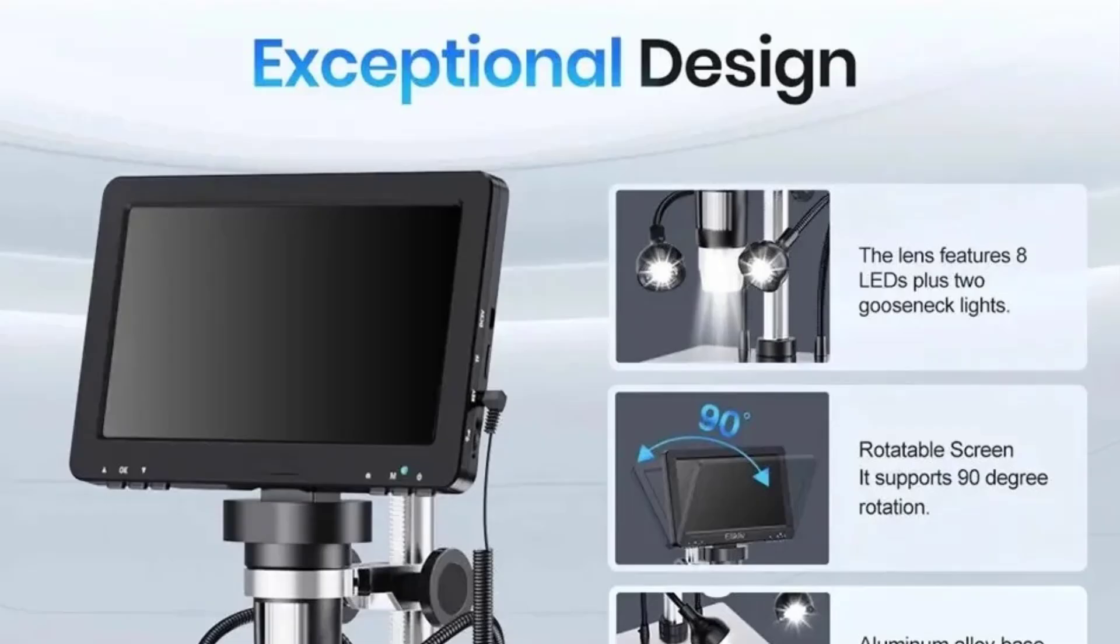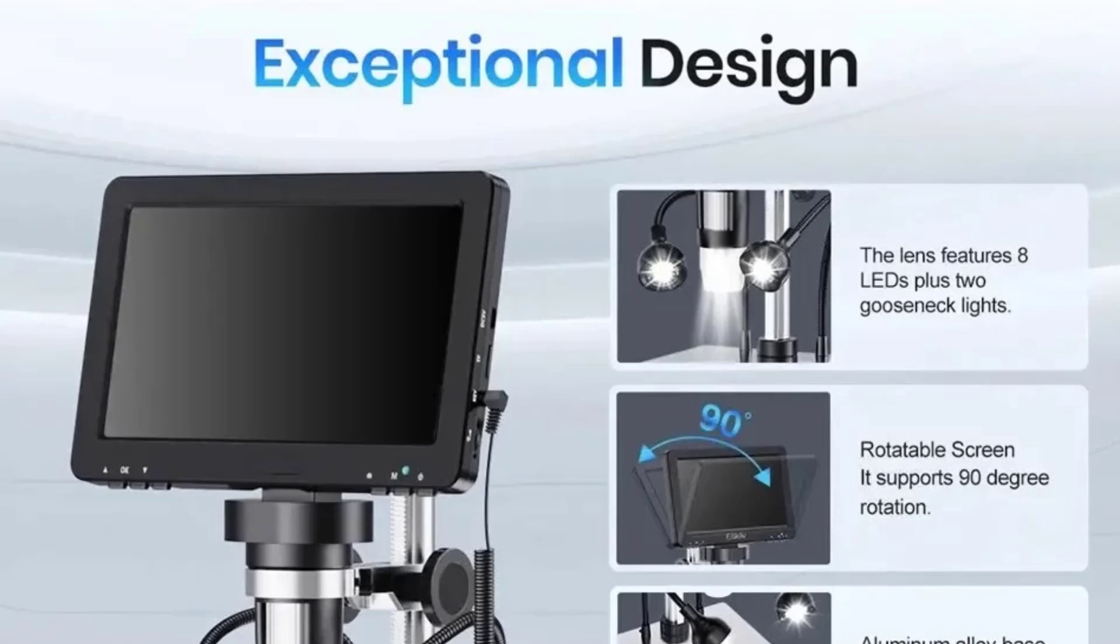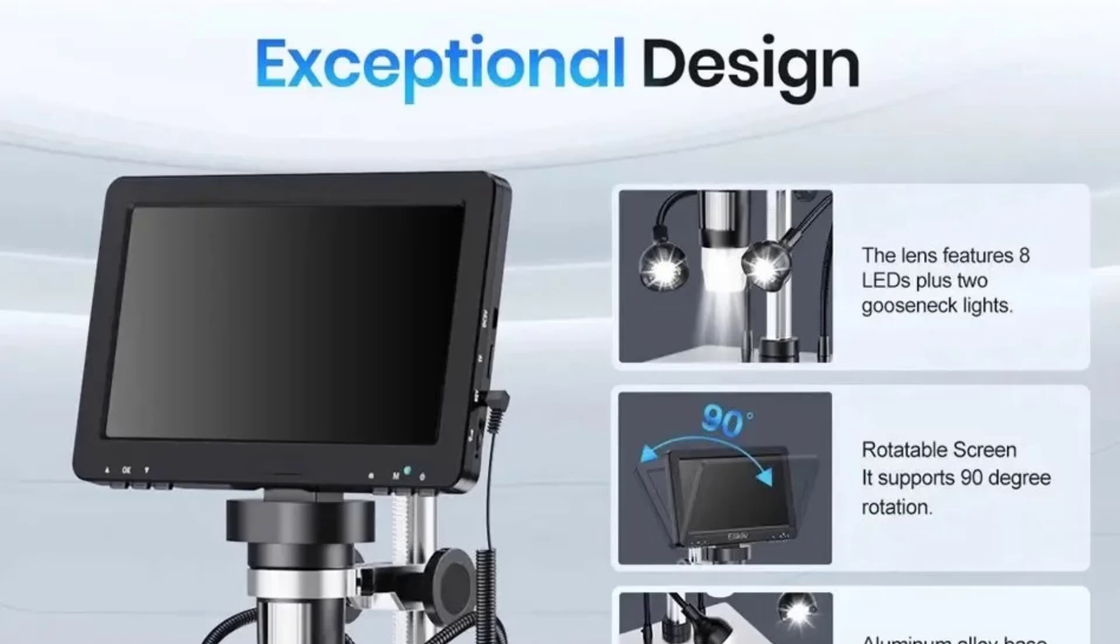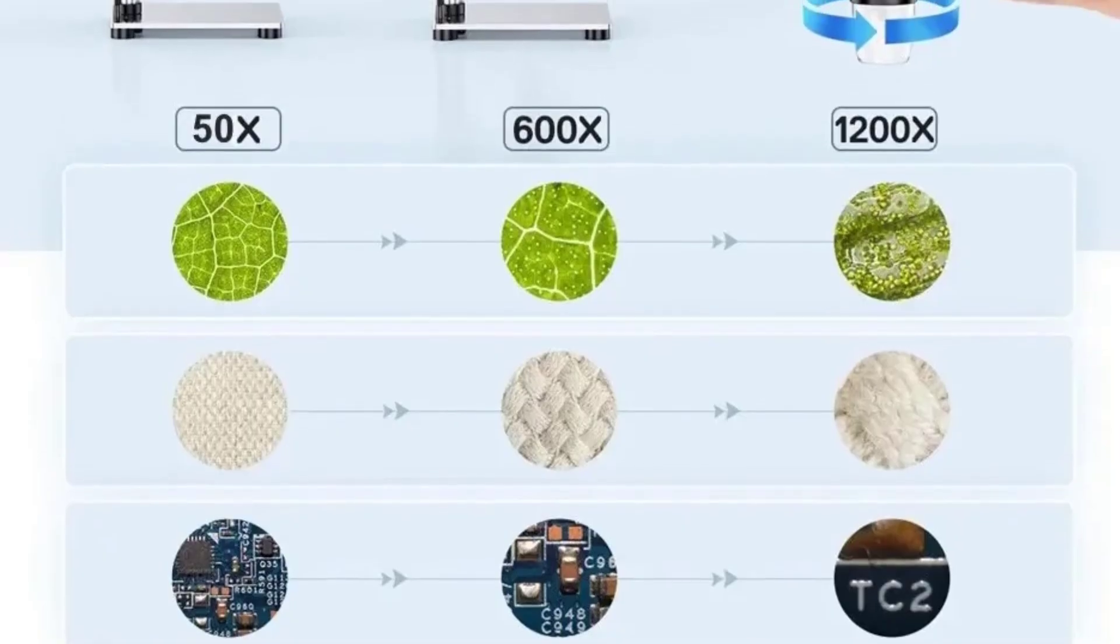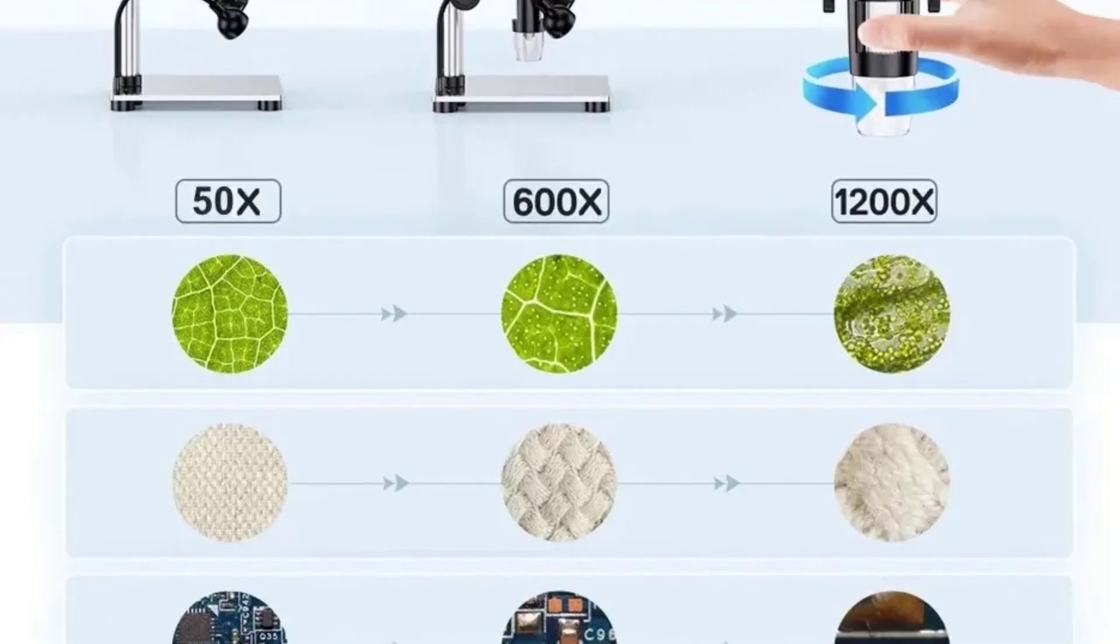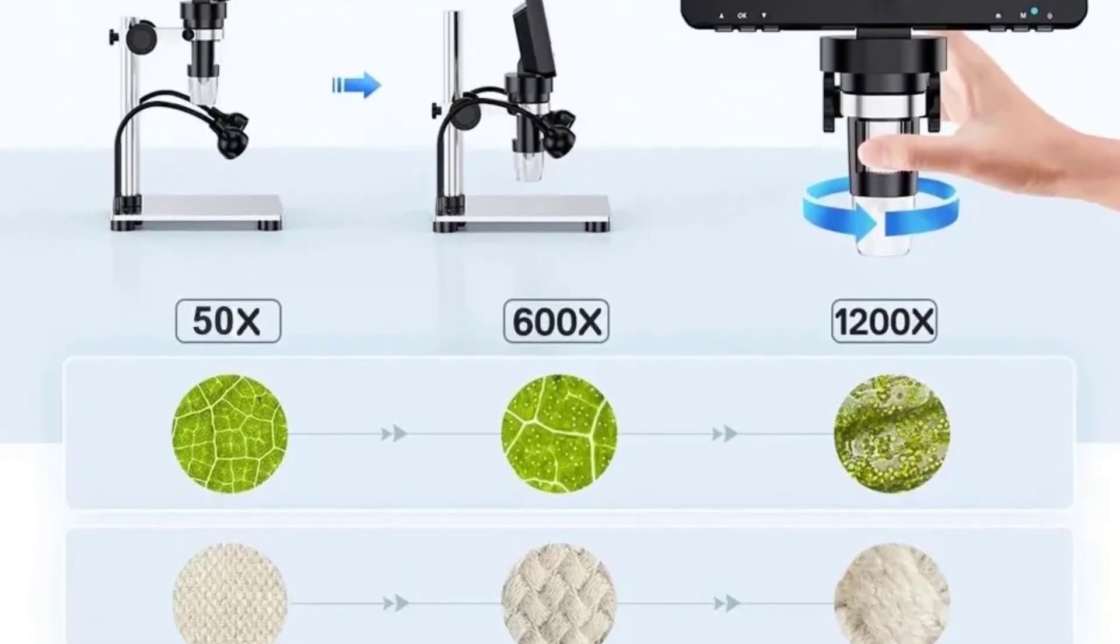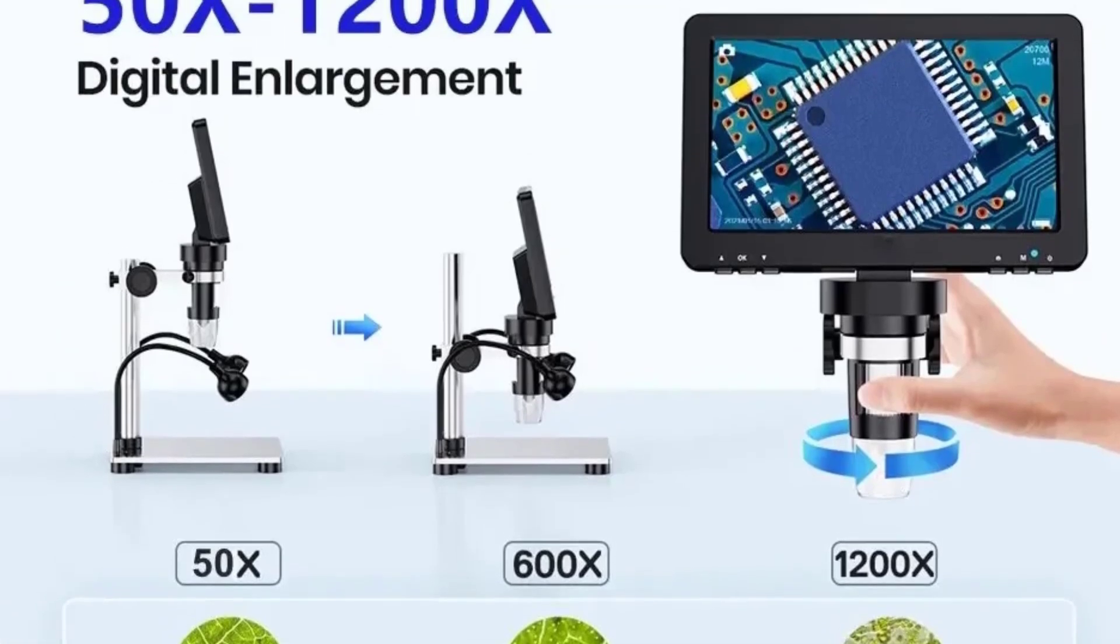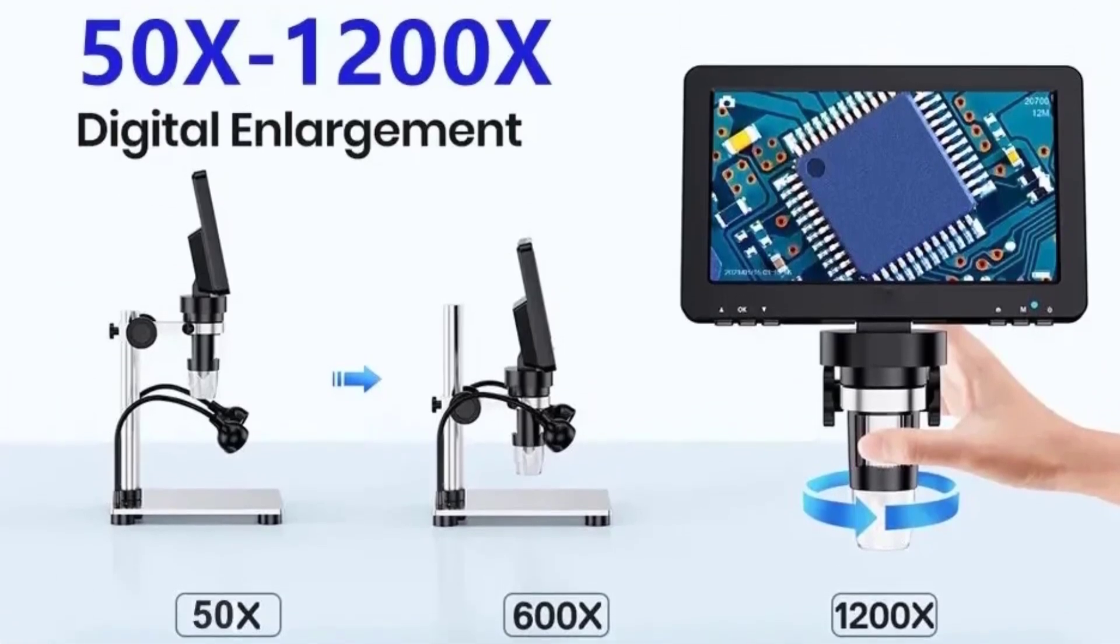7-inch Rotatable FHD Screen. Working together with 12-megapixel ultra-precise focusing camera and 1080p high-definition imaging, this LCD microscope creates high-quality images and videos and brings incredible micro-world-observing experience. The rotatable 90-degrees screen design improves ergonomics and eliminates eye and neck strain.